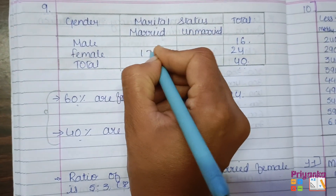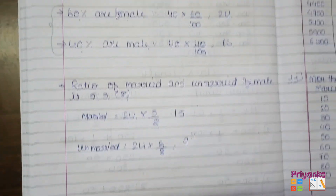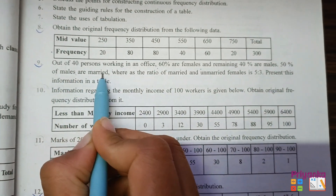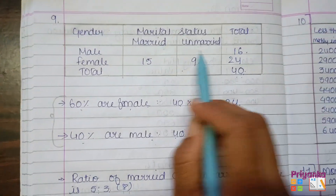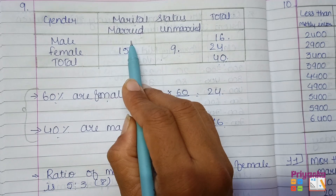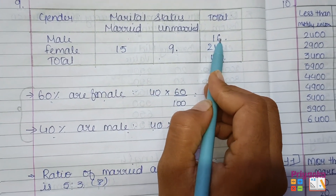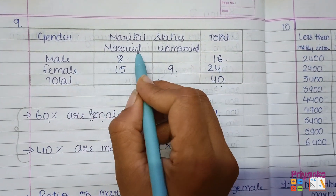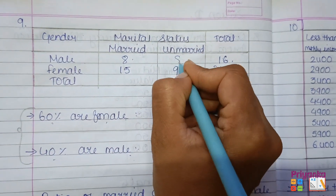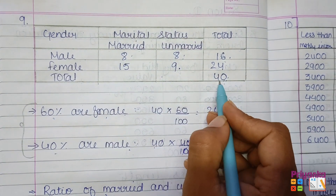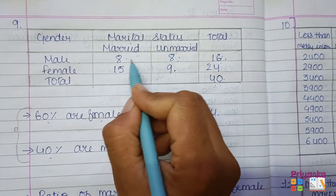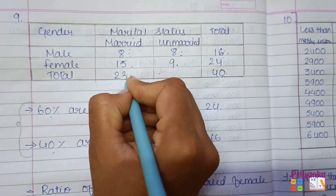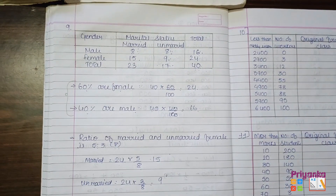The remaining information is that 50% of males are married. Out of 16 total males, 50% means 8 are married. Remaining: 16 minus 8 equals 8 unmarried males. Now taking the total: married total is 8 plus 15 equals 23, and unmarried total is 8 plus 9 equals 17. That is the solution to question number 9.